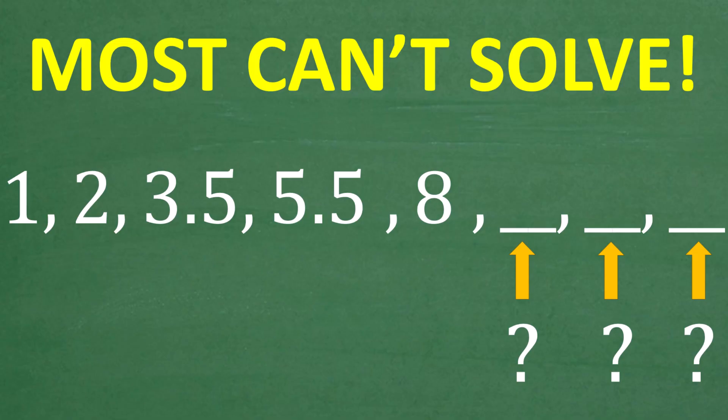So stick with the problem. But let me explain what we have here. What we're trying to do is find the next three numbers in this pattern. We have a sequence of numbers: the first number is one, the second number is two, the next number is 3.5, then we have 5.5, then we have eight. And what we're looking for is the next three numbers in this sequence.